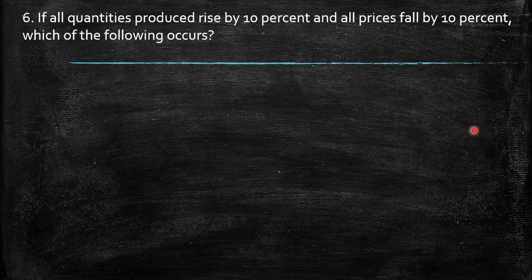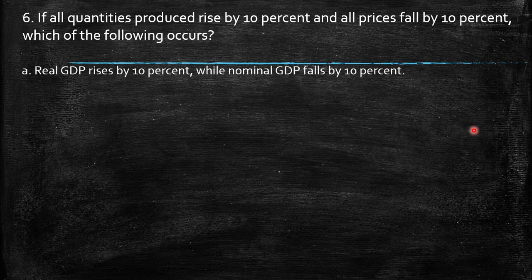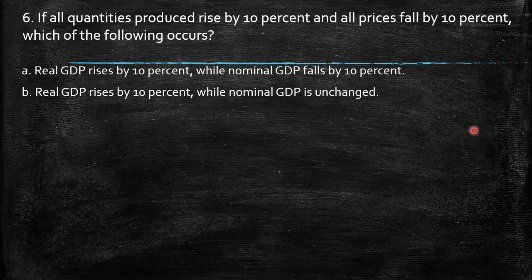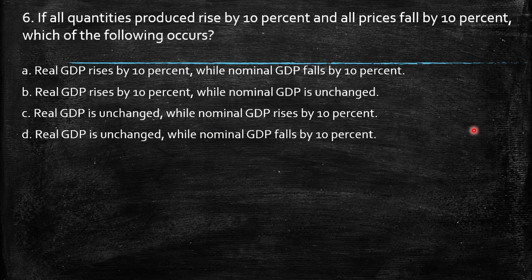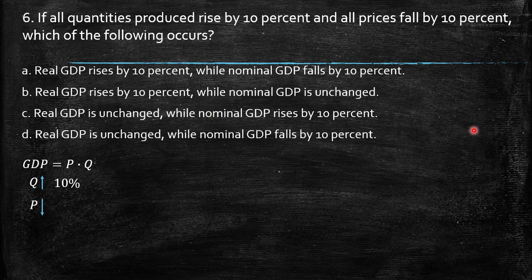Last question: if all quantities produced rise by 10 percent and all prices fall by 10 percent, what occurs? The options are: real GDP rises 10% while nominal GDP falls 10%; real GDP rises 10% while nominal GDP is unchanged; or nominal GDP falls 10%. We can consider GDP as the identity: price times quantity. Let's work through a numerical example.